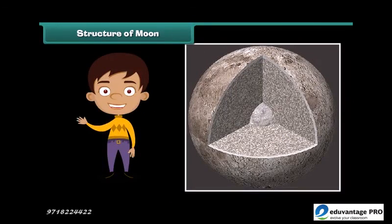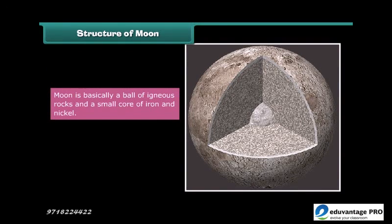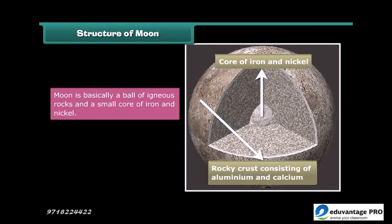Have a look at the interior of the moon. The moon is basically a ball of igneous rocks and a small core of iron and nickel, and there is a rocky crust consisting of aluminum and calcium.